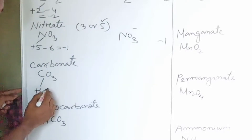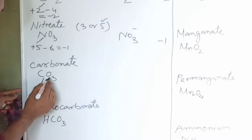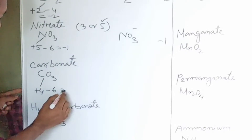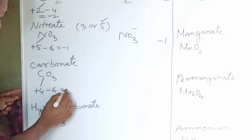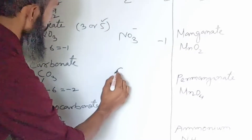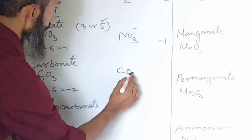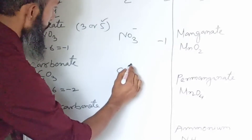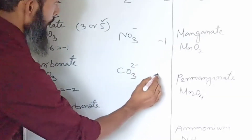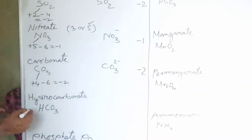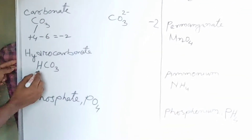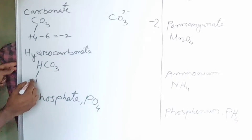Now carbonate — carbon has valency 4, it is electropositive. Oxygen is electronegative with valency 2. Three atoms of oxygen give 2 times 3 equals 6. So plus 4 minus 6 gives valency minus 2. Carbonate symbol is CO3 2-minus.